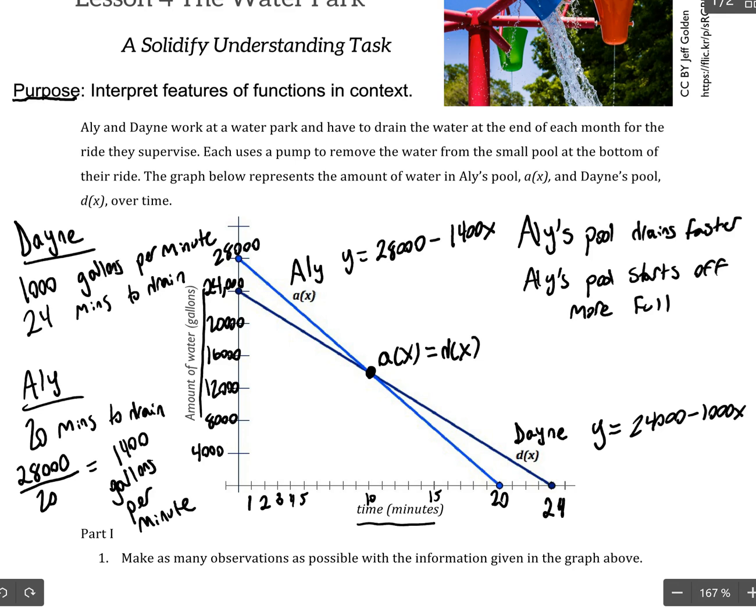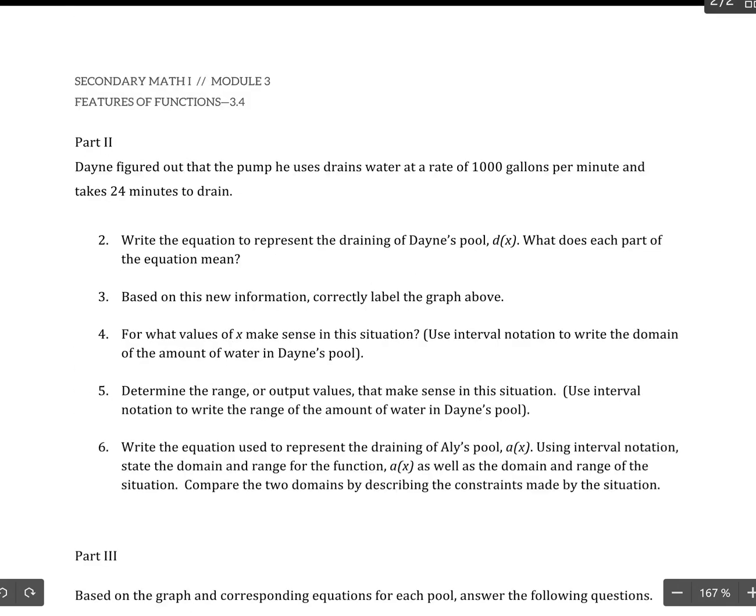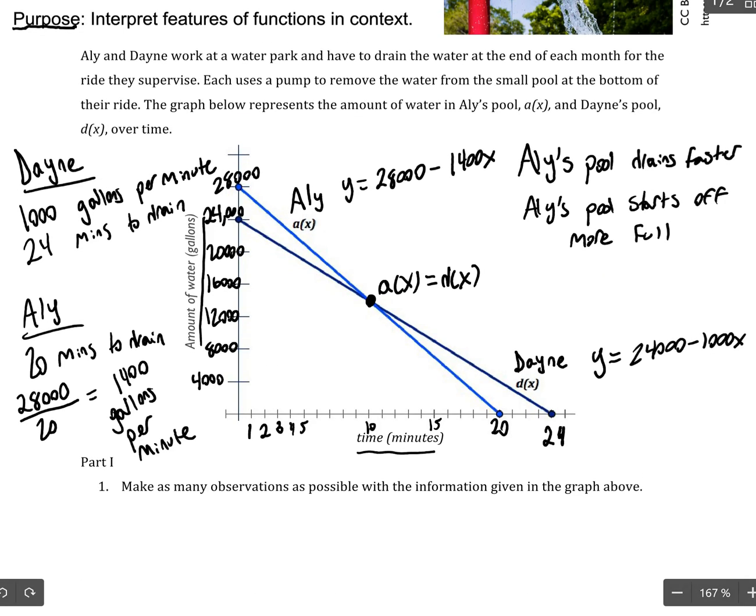So, what does that mean in context? That means, that tells us where the time at which the pools will have the same amount of gallons in them. And so, let's find out specifically what time that's going to be. And I can see visually, it looks like that point is going to be 10, 14,000.